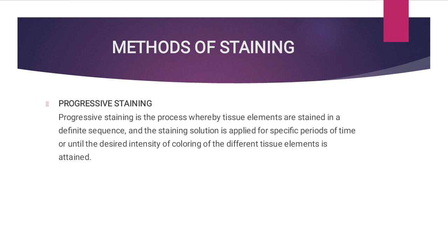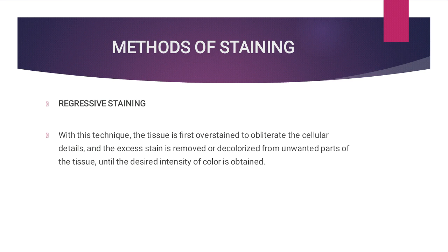Progressive staining is the process where tissue elements are stained in a definite sequence. The staining solution is applied for a specific period of time until the desired intensity of coloring of the different tissue elements is obtained. On the other hand, regressive staining is a technique where a tissue is first overstained to obliterate the cellular details, and then the excess stain is removed or decolorized from unwanted parts of the tissue until the desired intensity of color is obtained.